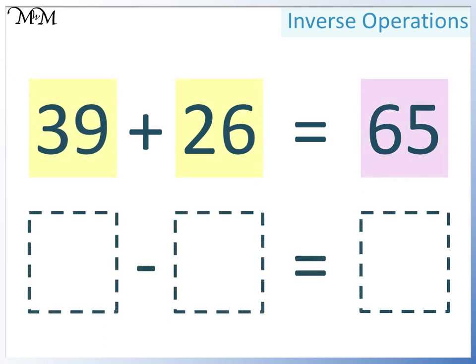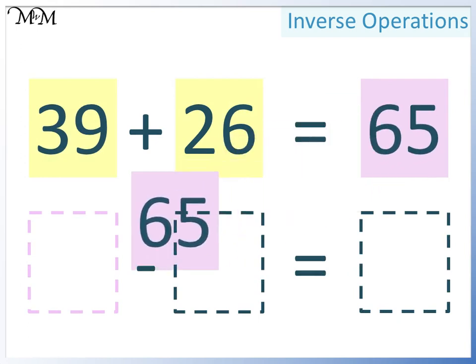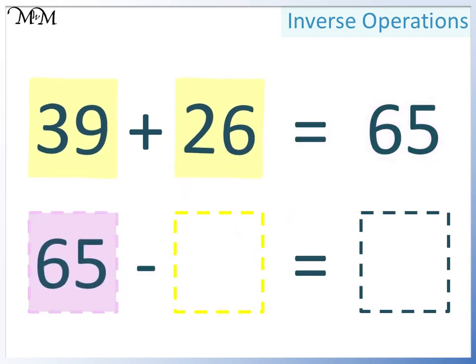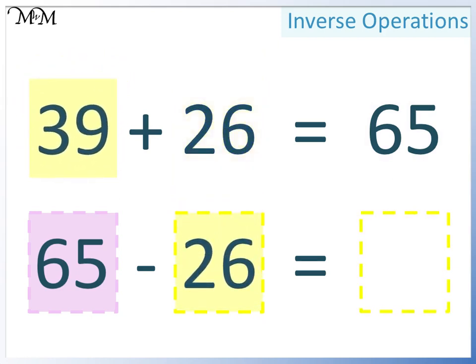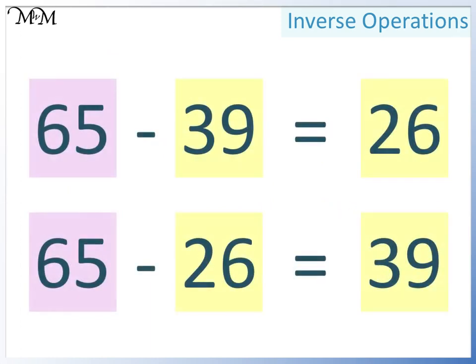We can write this in a different order. Again, the largest number must go at the start. Either of the two smaller numbers can go next. We had 39 here last time, so this time we'll write 26, and in the final space we'll have 39. The two subtractions are 65 take away 39 equals 26, and 65 take away 26 equals 39. The largest number is at the start of both, and the two smaller numbers can be written in any order.